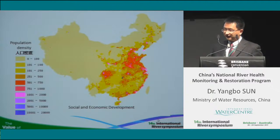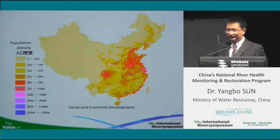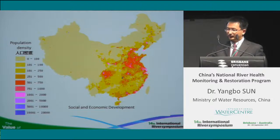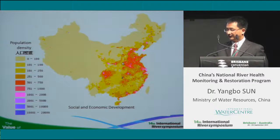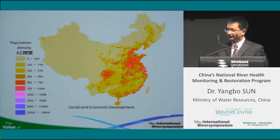Comparing the natural conditions of China's landscape with rapid economic and social development: this is the population density of China. The most populated area is located in the northeastern part of China, which is exactly the Yellow River basin. It also belongs to the arid and semi-arid area of China, so water scarcity combined with high population density makes this area subject to severe water stress, creating many challenges for river basin management.